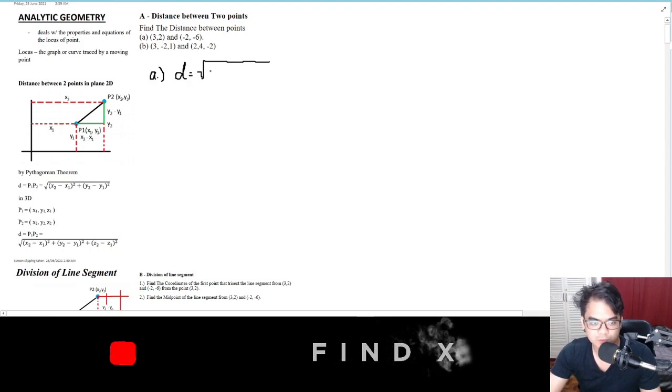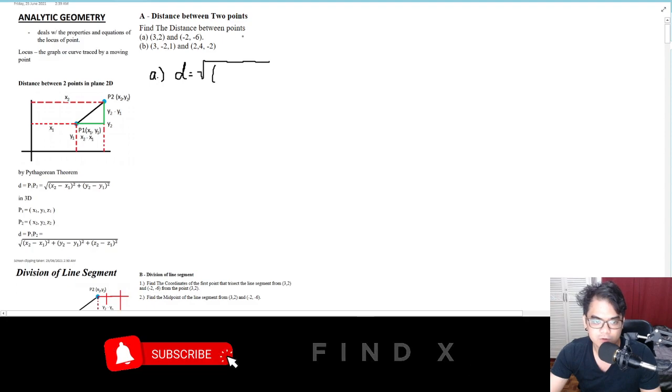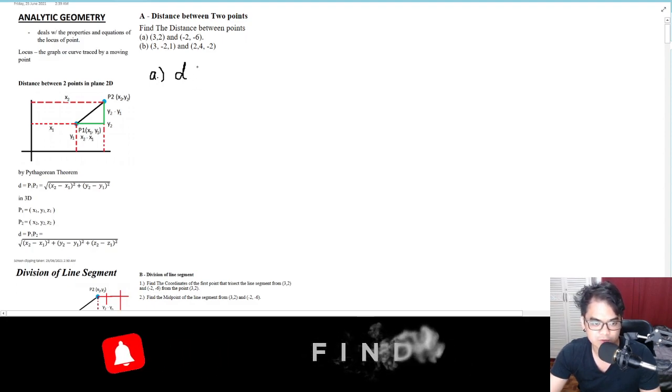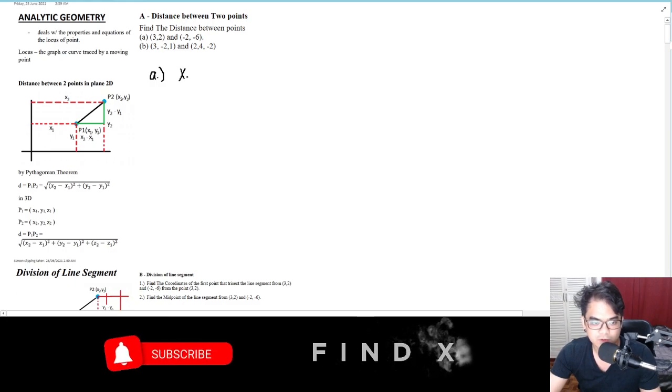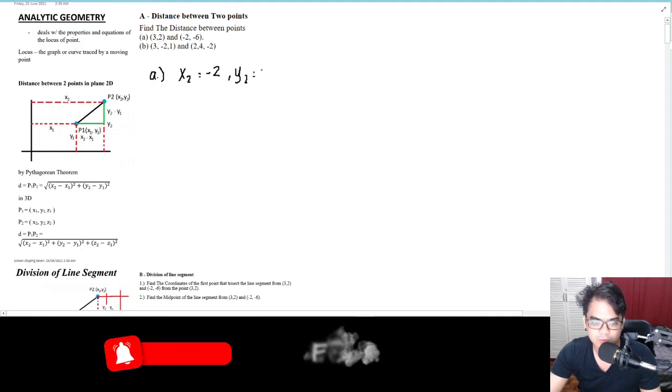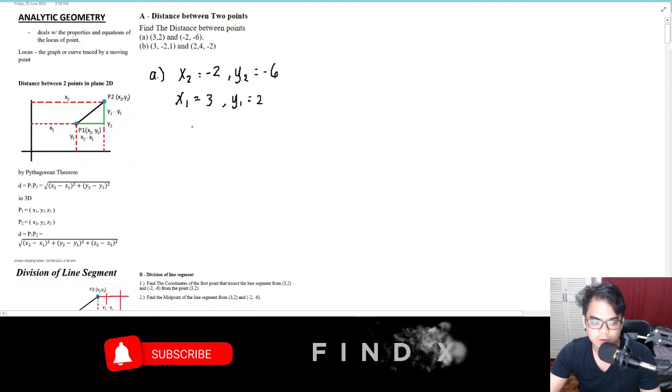Let me just write down the givens first. x2 equals negative 2, and y2 equals negative 6. Then x1 will be 3 and y1 will be 2.